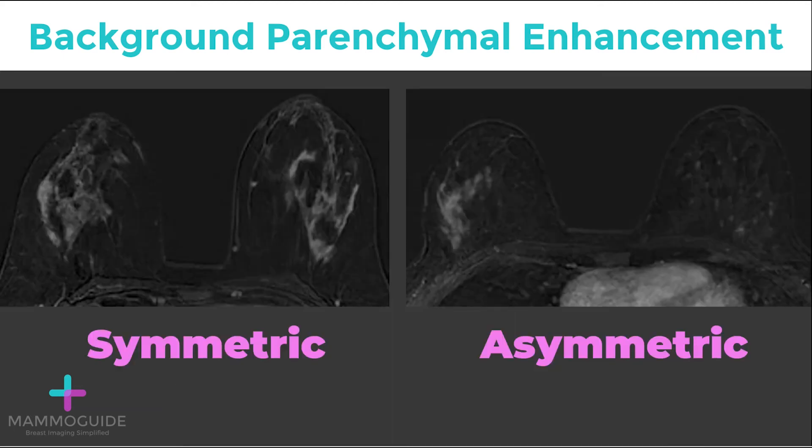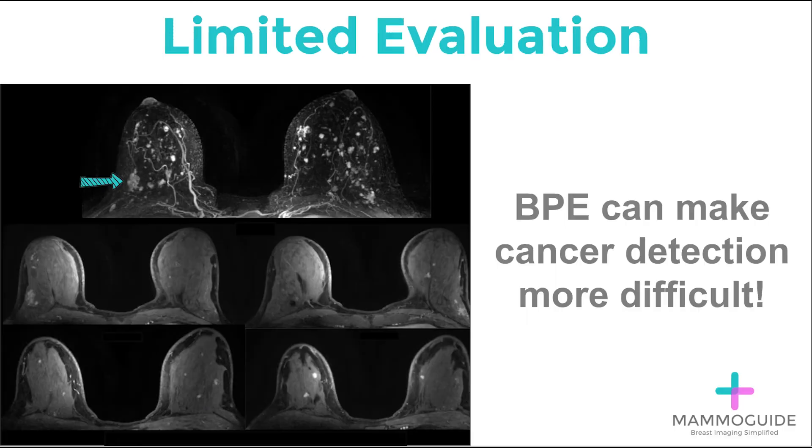Sometimes the background parenchymal enhancement can be symmetric, where both breasts look the same. Other times, one breast may have more background parenchymal enhancement than the other. A common scenario where this occurs is if the patient has a history of radiation on one side.